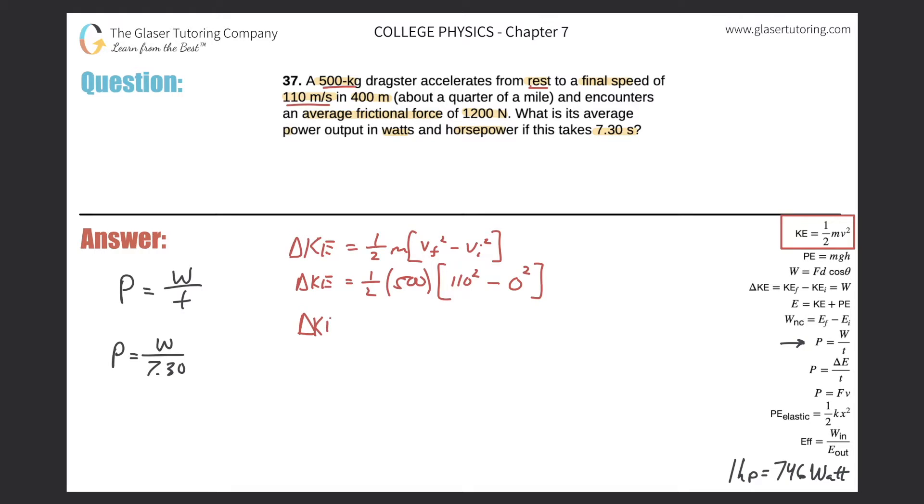Now we can find the average change of kinetic energy here. We have 0.5 times 500, multiplied by 110 squared. This works out to be 3.03 times 10 raised to the six joules. So this is the kinetic energy that the dragster has at the end of this quarter mile.